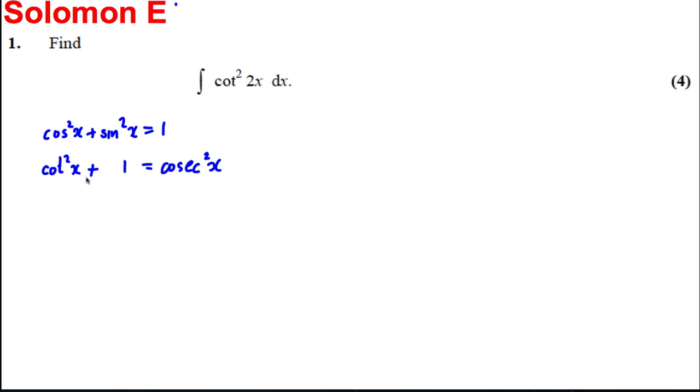OK, so I could use this identity here because I could replace cot squared of 2x, which would therefore be cosec squared of 2x subtract one. So let's write this as an integral, the integral of cosec squared 2x subtract one, all of that with respect to x.